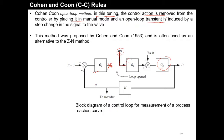The open loop response is obtained with the help of a step change. Whatever control command you are going to give, it is provided through a step change. The amplitude of this step is m, so the Laplace transform becomes m/s because the Laplace of u(t) is 1/s, so the amplitude with u(t) gives m/s.